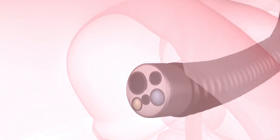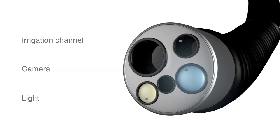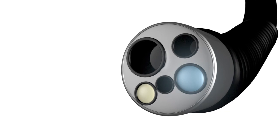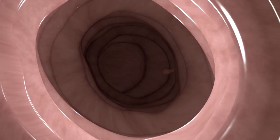The tip of the scope contains a camera, a light, an irrigation channel, an air and water nozzle, and a biopsy channel for the instrument. The camera sends a real-time video to a computer screen that allows visualization of the colon.